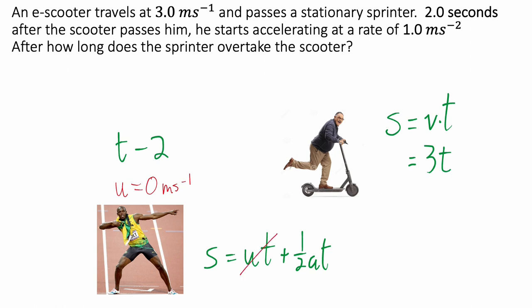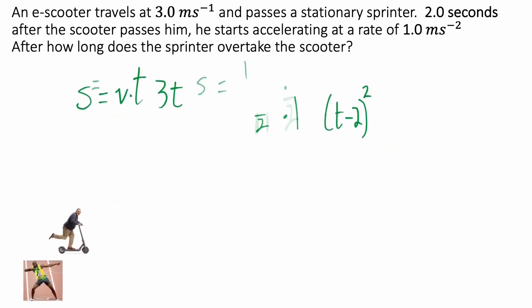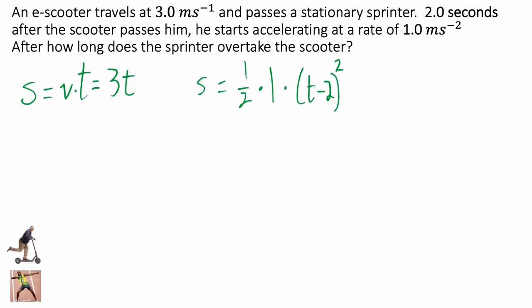Handily, the first part of the equation cancels out, leaving us with s equals half times 1 times t minus 2 squared. The square might give you a hint of the direction this is going mathematically. So, we're going to make the equations equivalent for s, and this will give us 3t equals half times 1 times t minus 2 squared.